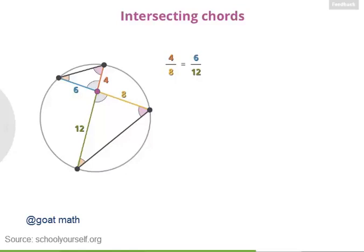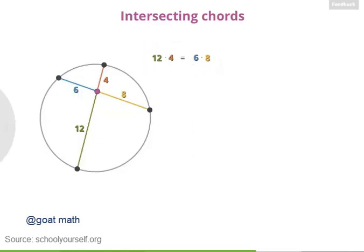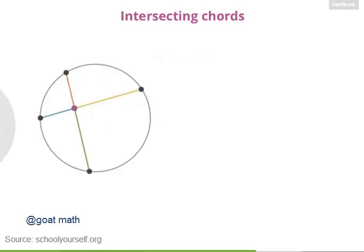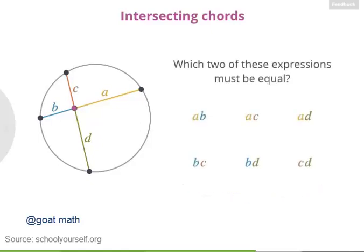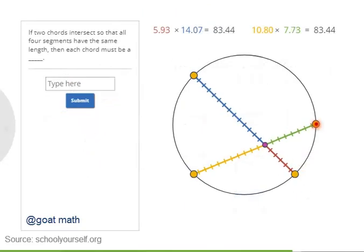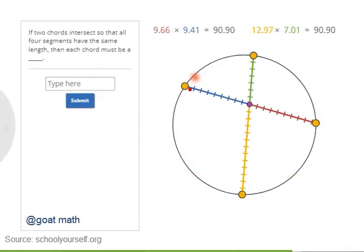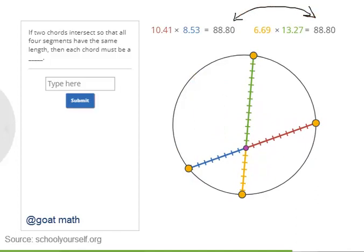Next, let's rearrange this equation. We can multiply both sides by 8, and then multiply both sides by 12. So this equation says that when you have intersecting chords, if you multiply the two segments of one chord, they equal the product of the segments from the other chord. This is true for every pair of intersecting chords. If the segments have lengths A, B, C, and D, then A times B equals C times D. You can drag the four points around the circle to verify this rule, then try this question: suppose two chords intersect so that all four line segments have the same length — what must each of these chords be?